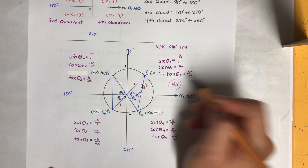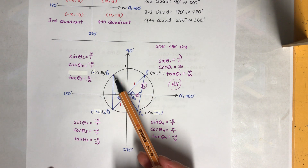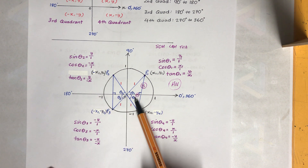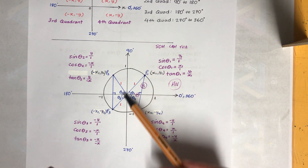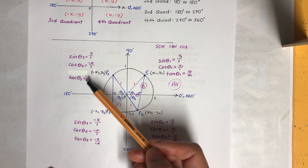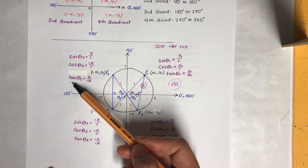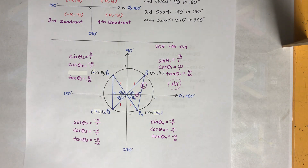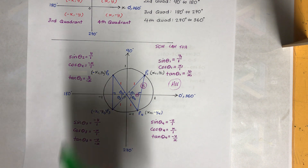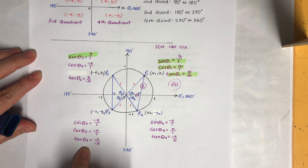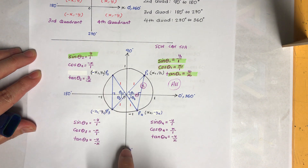All three trig ratios are positive in the first quadrant. For the second quadrant, point P2 has a negative x-coordinate but a positive y-coordinate. When we apply SOH CAH TOA, wherever the x-value is used it will be negative — that affects cosine and tangent. So the only trig ratio that is positive in the second quadrant is sine.